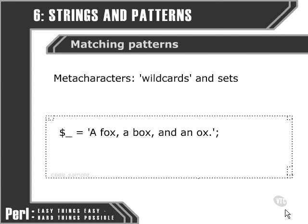The first one we're going to look at is the dot. In our string that we've just set up here, assigned to the default variable, we've got three words that immediately jump out as having a similarity. The similarity between them is that they all rhyme and are all spelt in a very similar way: fox, box, and ox. If we were to express the similarity in a way a computer understands, we'd say it ends in 'ox', but there could be something else before it. And that first meta character we're introducing is the dot.